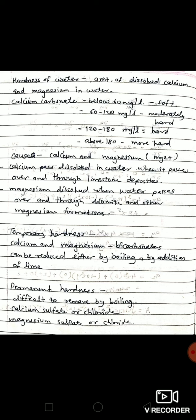When the amount of calcium carbonate is 120 to 180 milligrams per liter, it is hard water. And when calcium carbonate is above 180 milligrams per liter, it is very hard water.